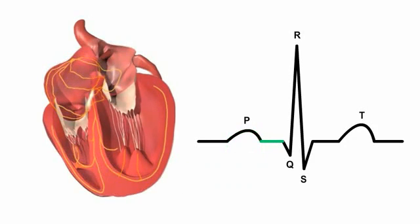The period of conduction that follows atrial systole and precedes the contraction of the ventricles is depicted on the ECG by the PR segment, a flat line following the P wave.